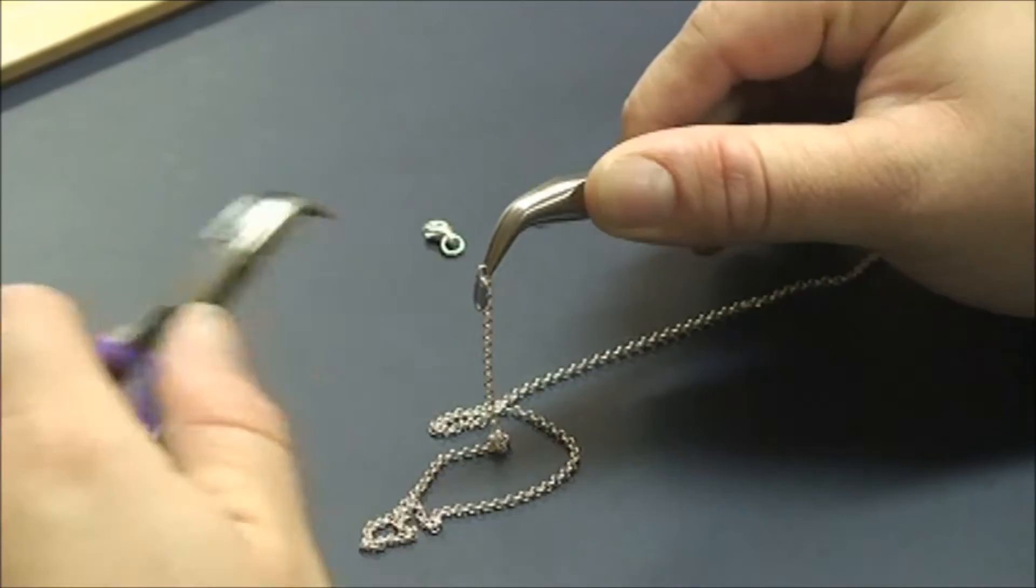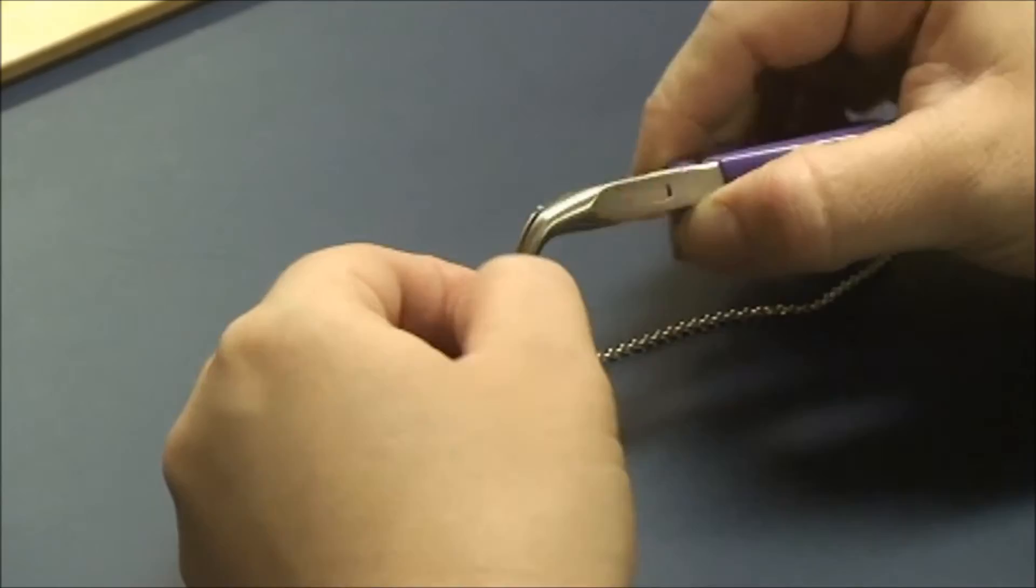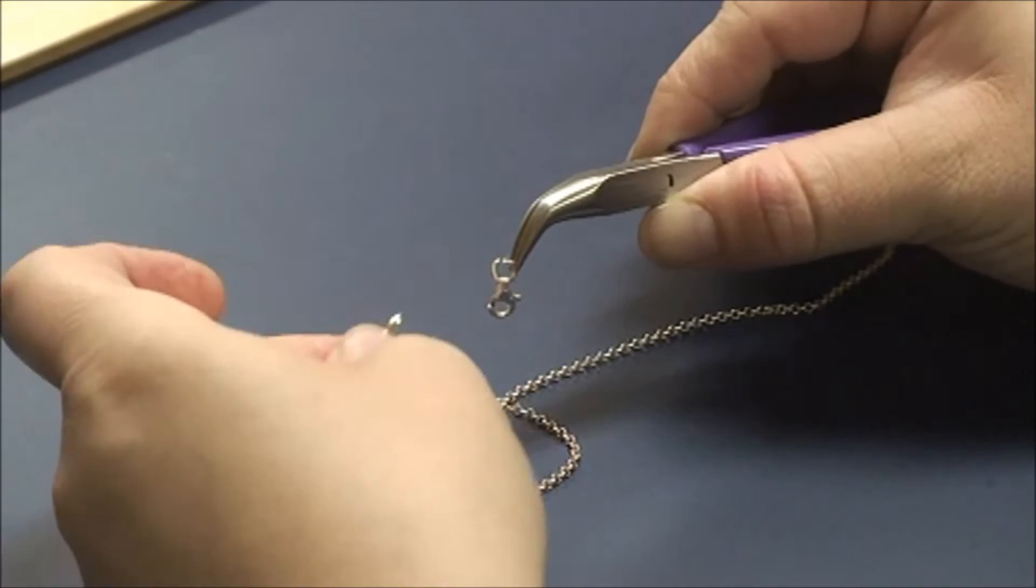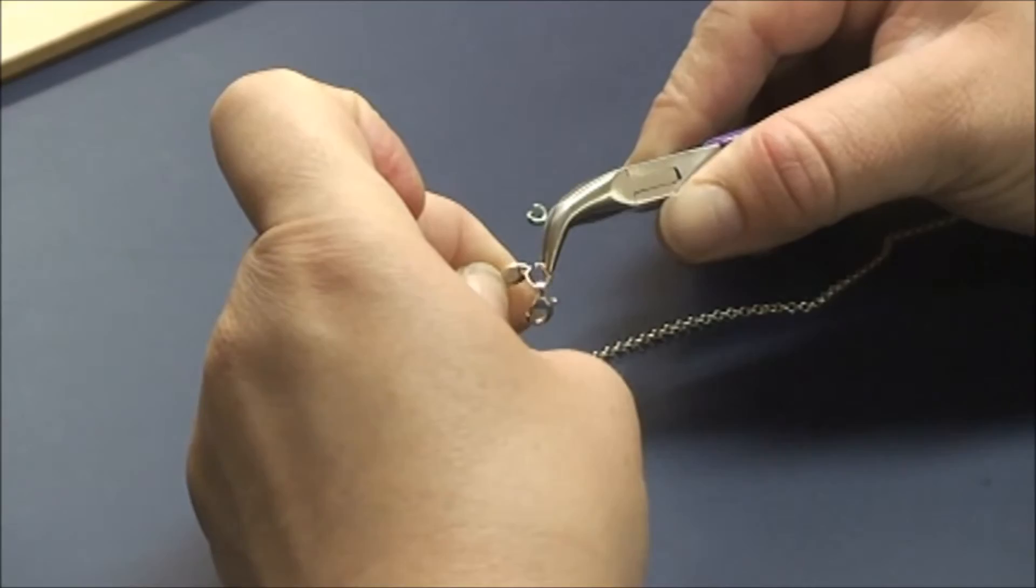Once you've closed it up, you want to tap the end of it, feel it, make sure it's a nice good closure, and then you take your lobster clasp, open that jump ring up, and you're going to connect that on the other side of your quality tag.